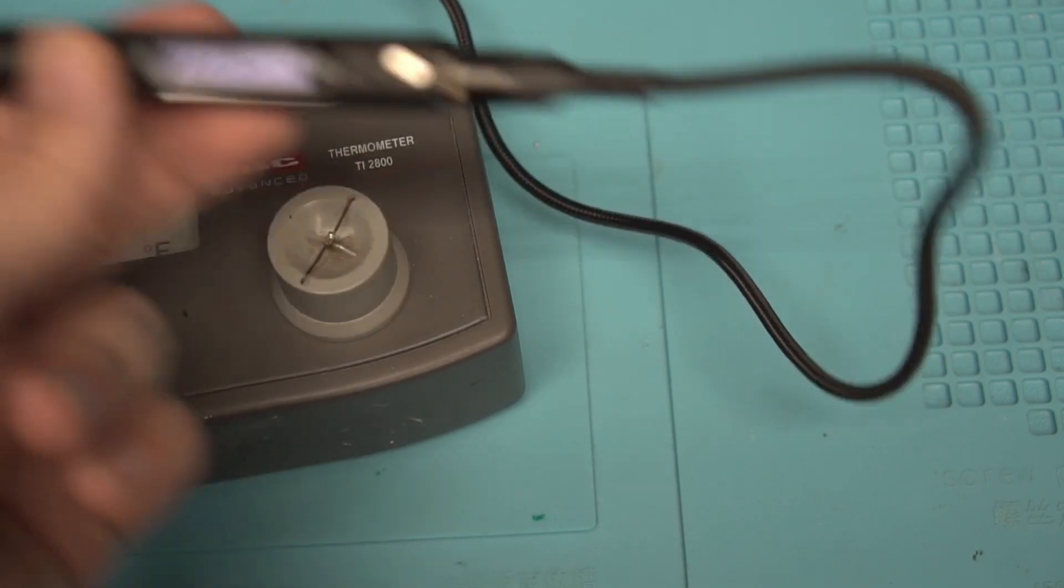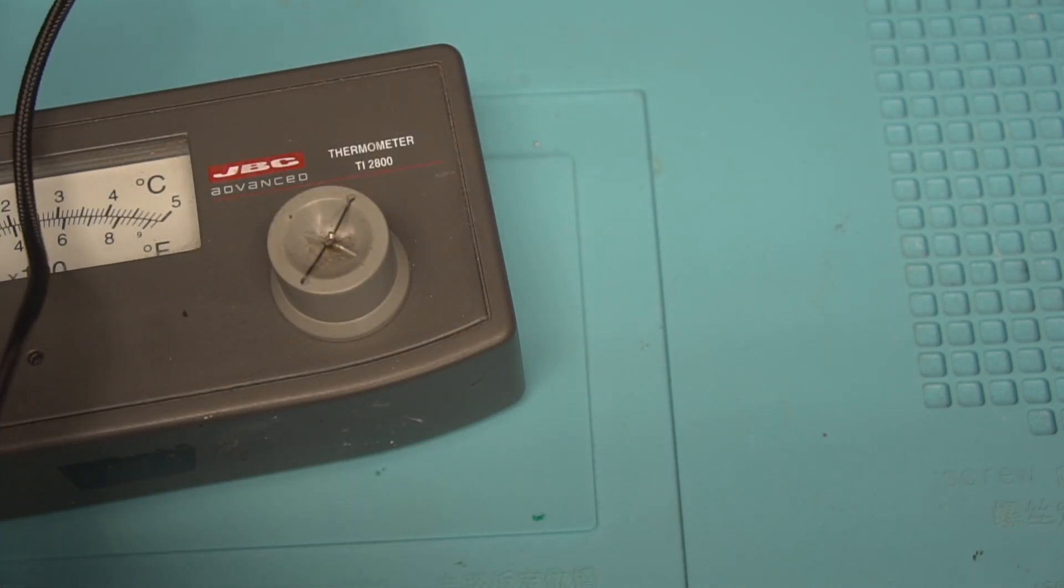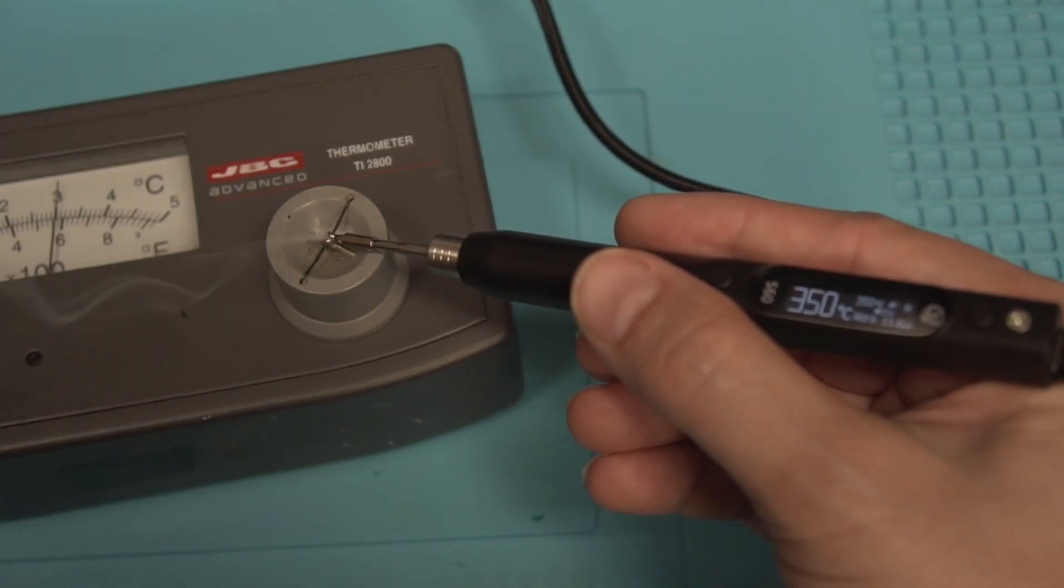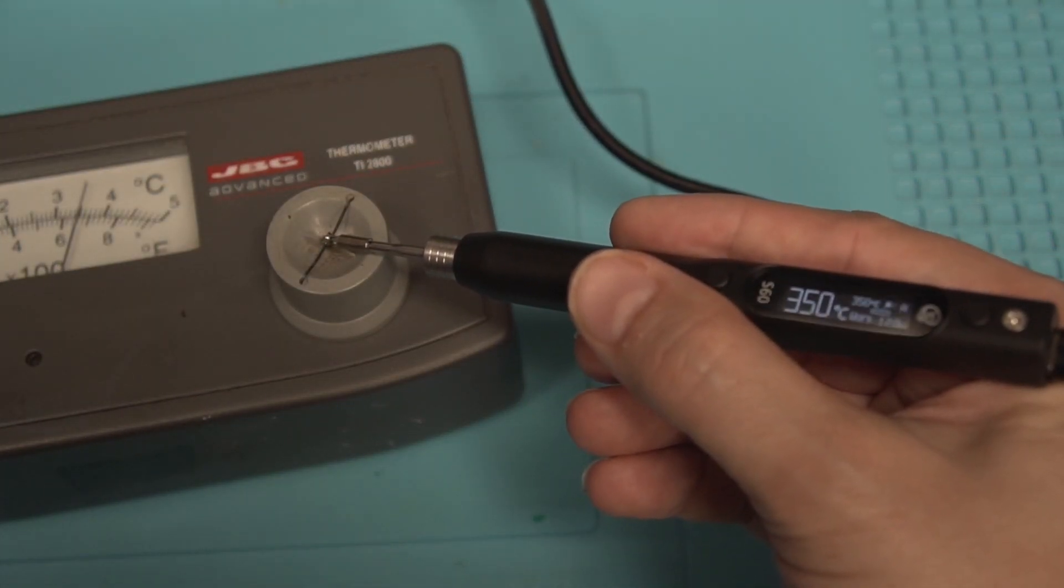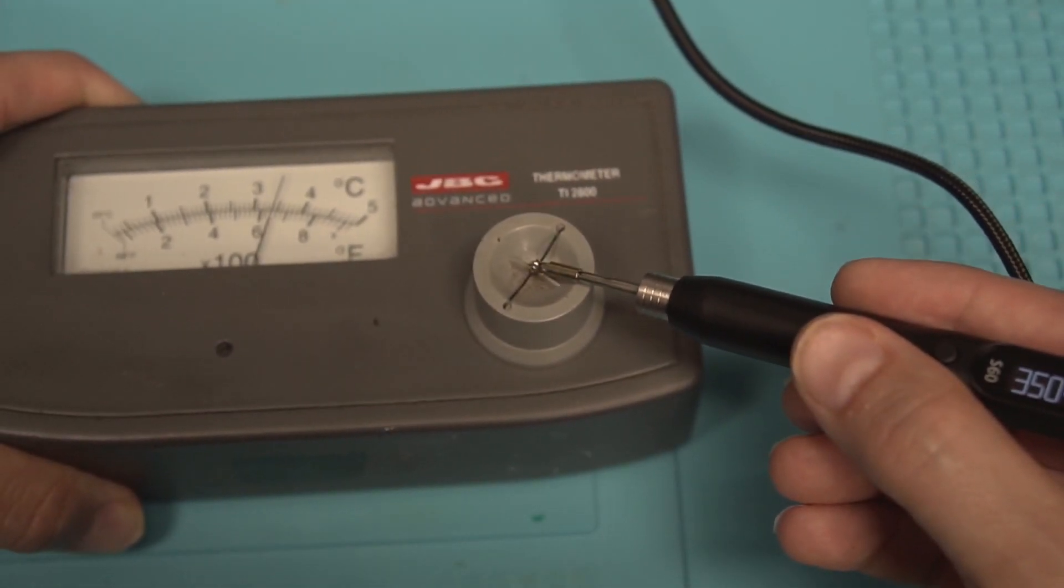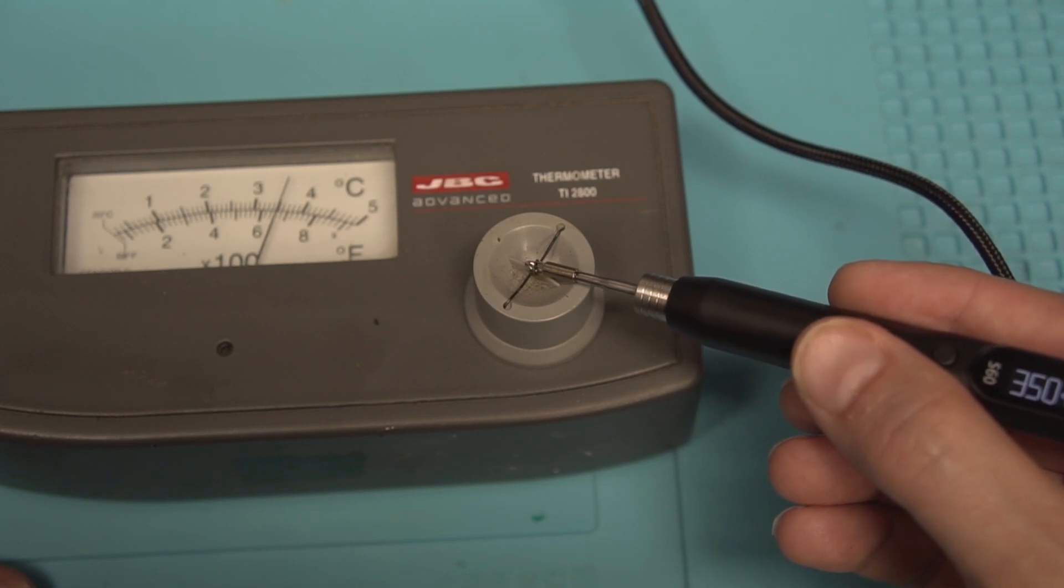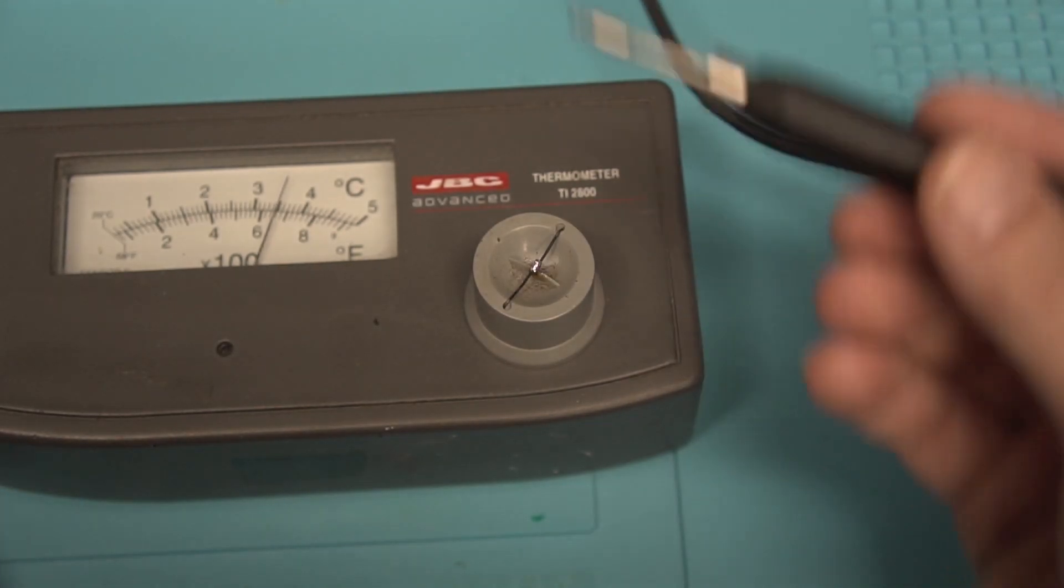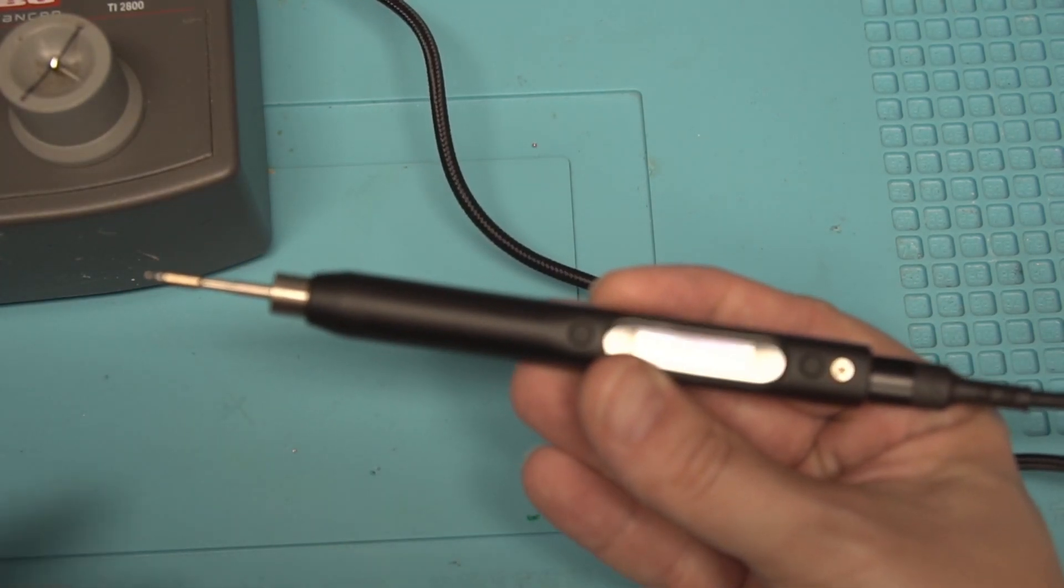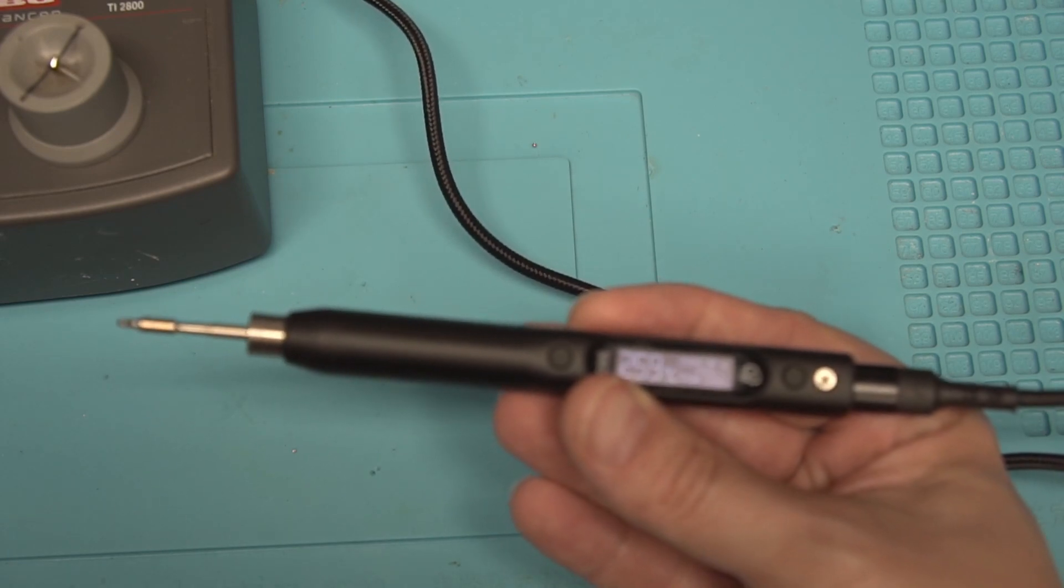So let's go ahead and check it one more time. Alright. And we are right on the money at 350, which is what we are set to for running. So yeah. As you can see, the calibration did work. So you can calibrate this tool to a genuine JBC tip.